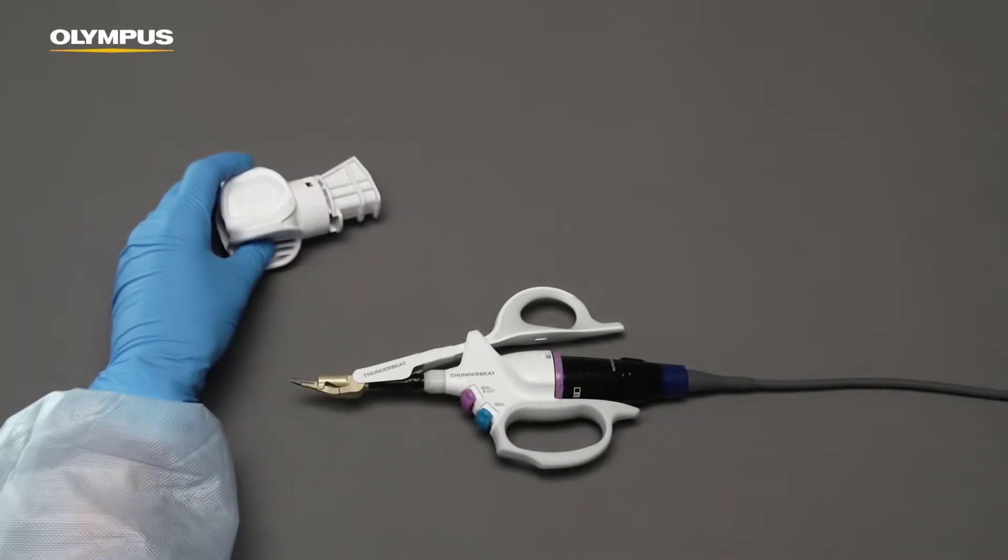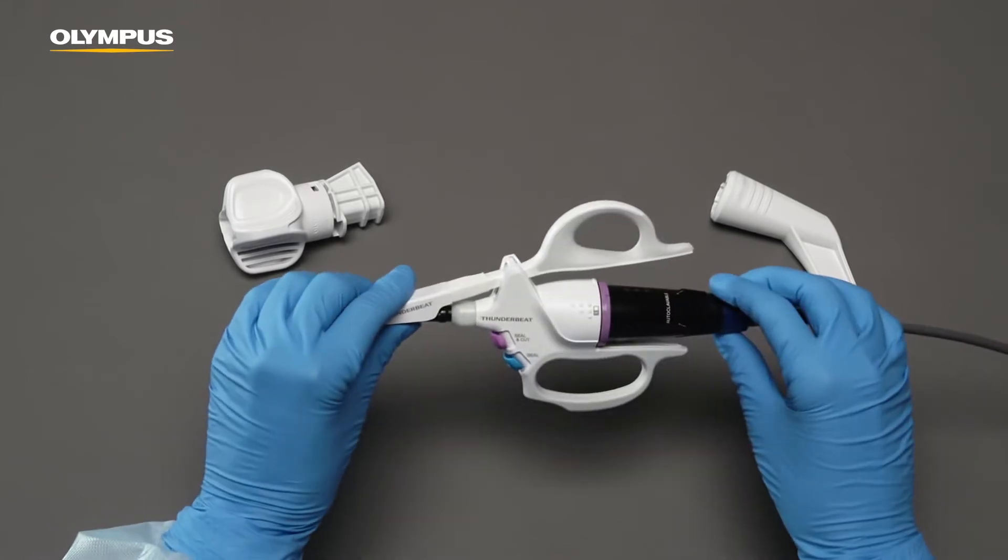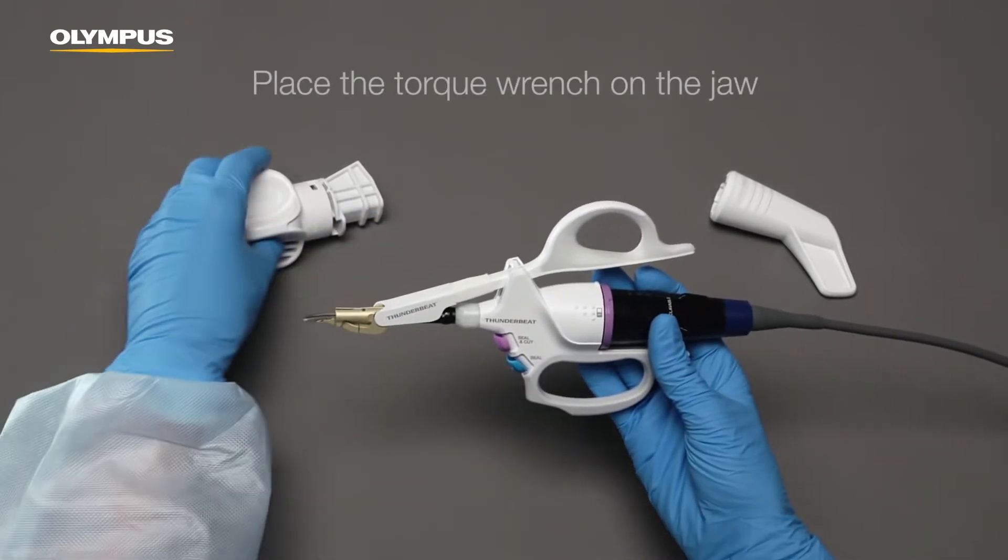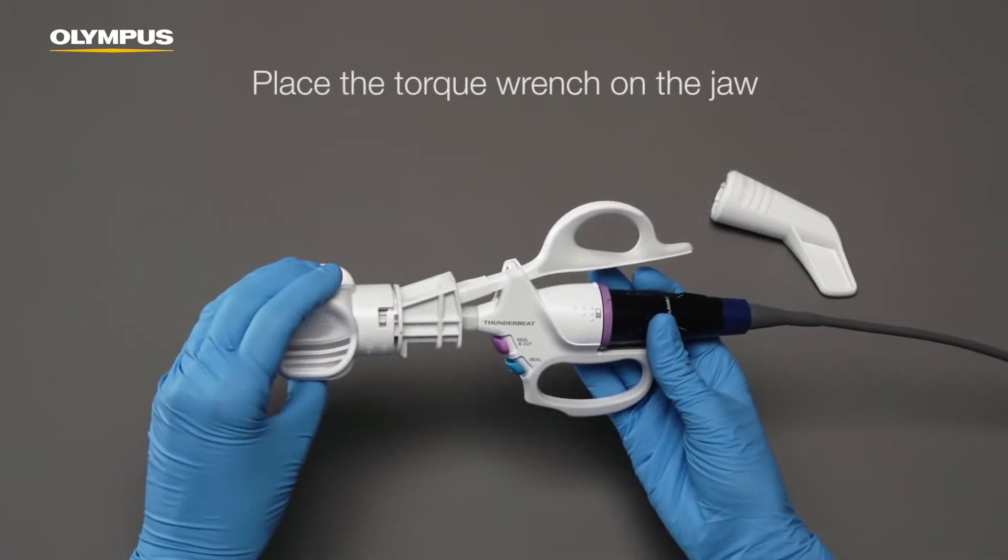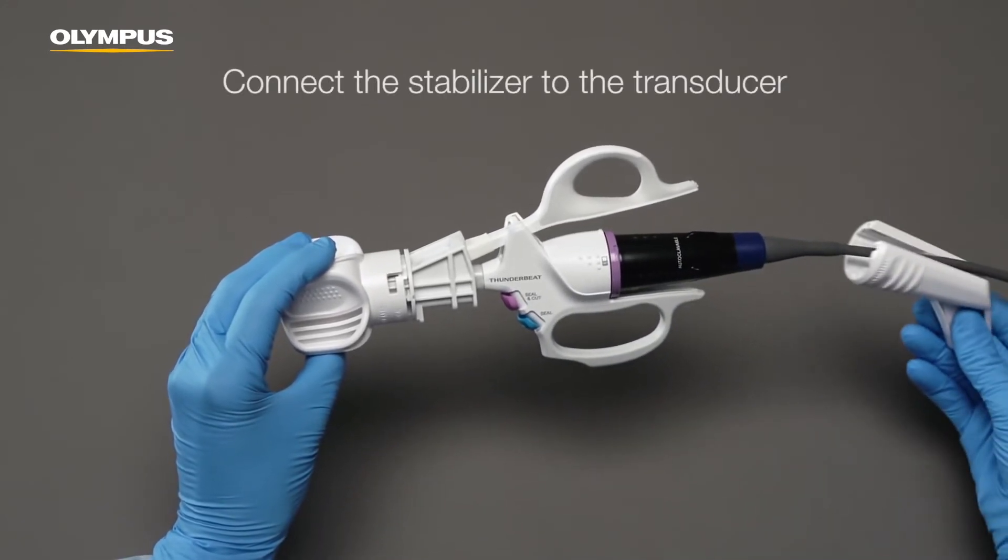For disassembly, you will need both the torque wrench and the stabilizer. Place the torque wrench on the jaw and connect the stabilizer to the transducer.